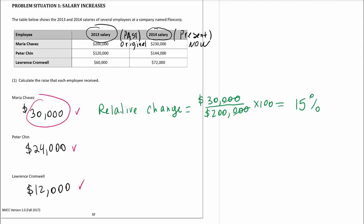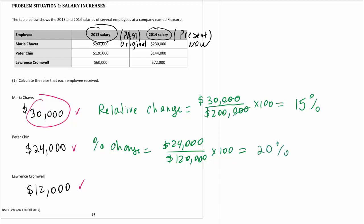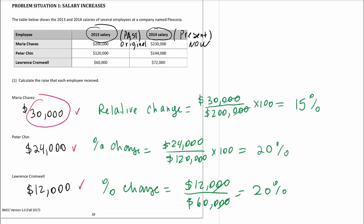Her salary was the largest to begin with, so the $30,000 increase on her large salary ended up being only 15%. Now we're going to do the same for Peter and Lawrence. For Peter, the percent change is $24,000 on a salary of $120,000. You divide it first and then multiply by 100. 24 divided by 120 is 0.2, multiplied by 100 gives us 20%. And finally for Lawrence, he had the lowest salary — $12,000 increase on a salary of $60,000 — and that change is also 20%.